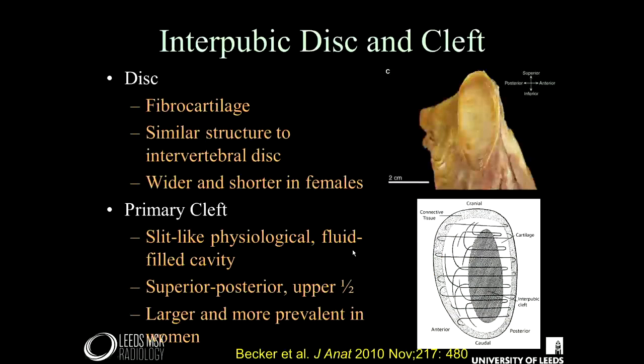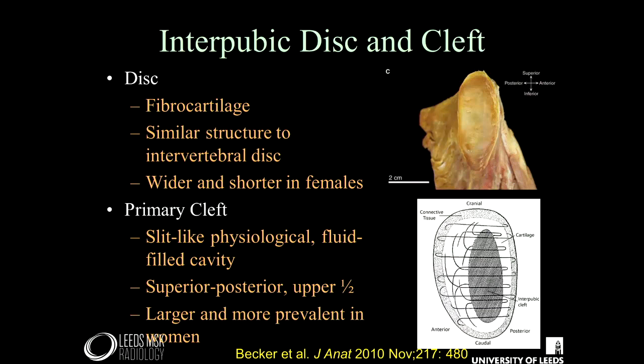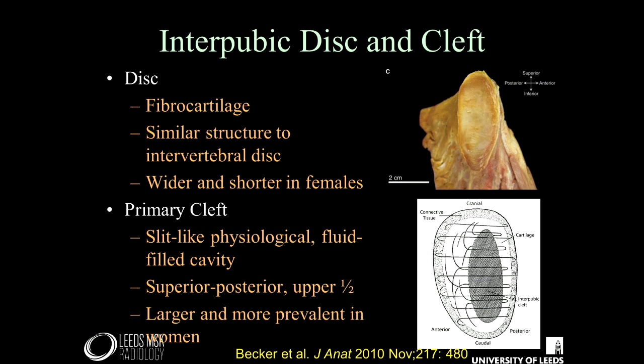Working through that anatomy: first, we have the symphysis pubis, which has a fibrocartilage intrapubic disc, similar in structure to the disc in the spine, and it's typically wider and shorter in females. Within the joint, the cartilage can have a primary cleft — you'll see why that's significant later on. Usually this develops as a person ages, and a secondary cleft can be a sign of disease.